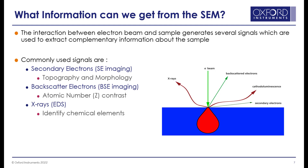Secondary electrons are those which are knocked out of the sample. These are used to create topographic images. Backscattered electrons come from the incident electron beam and create atomic number contrast images, which show the density variations, such as where the heavy elements or the light elements are. Characteristic X-rays are generated when the electron beam knocks electrons out of the atoms that make up the sample. This causes other electrons from within the atom to take their place, leading to the emission of an X-ray. This X-ray is measured in terms of its energy with a silicon drift detector, an approach called energy dispersive X-ray spectroscopy, or EDS. The signal from the detector is then processed to identify and quantify the elements in the sample.